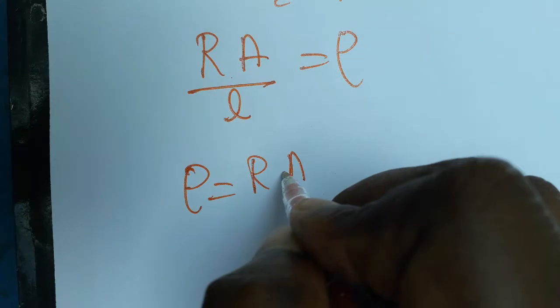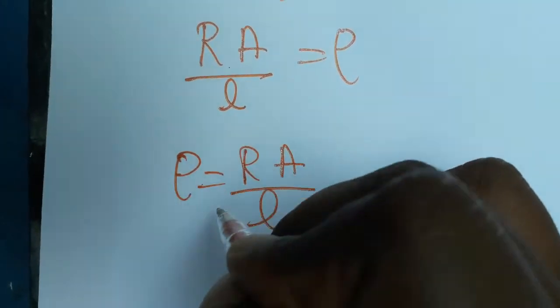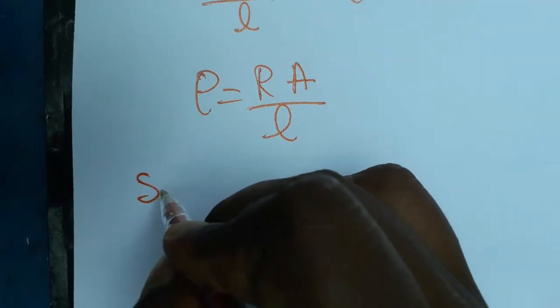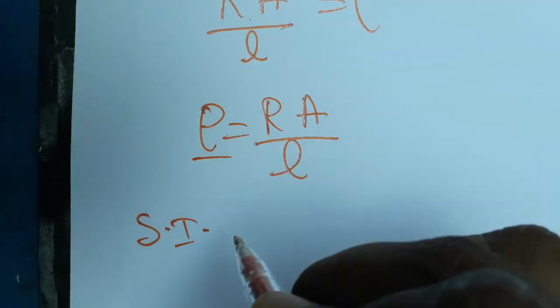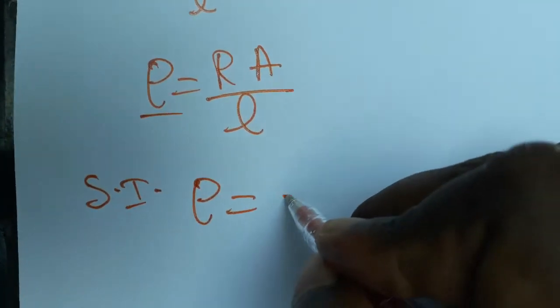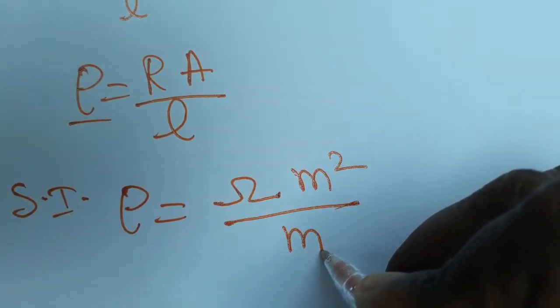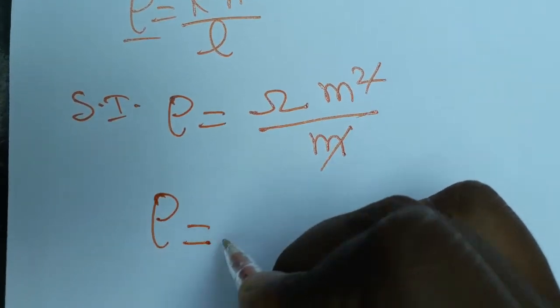Now we are going to find the SI unit of resistivity. Resistivity is equal to resistance times area by length. SI unit of resistance is ohm, area is meter square, and length is meter. So meter gets cancelled, and resistivity SI unit will be ohm meter.